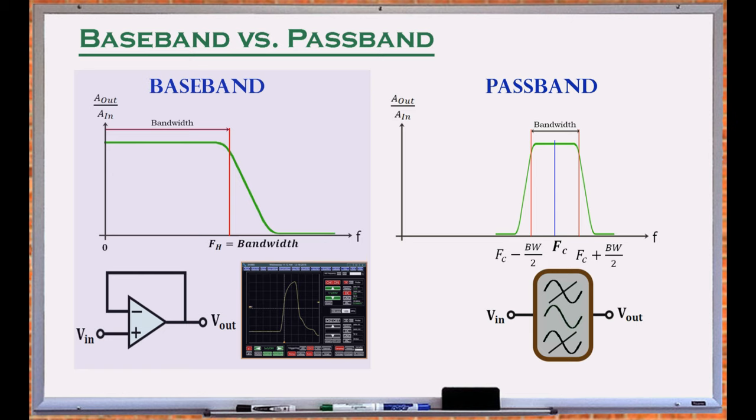In a baseband system, bandwidth defines the 3 dB cutoff frequency, whereas in a passband application, both the bandwidth and the center frequency are required to determine the frequency response of the system.